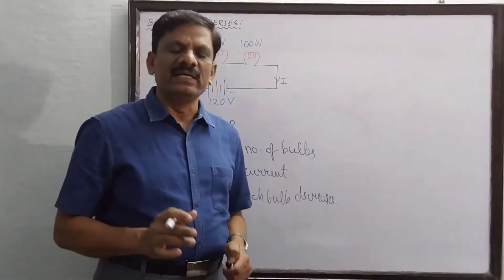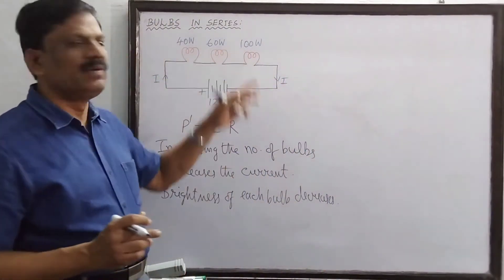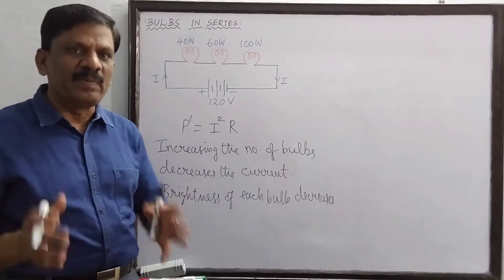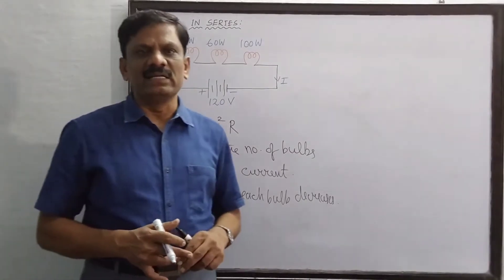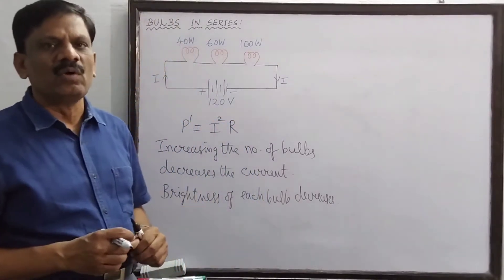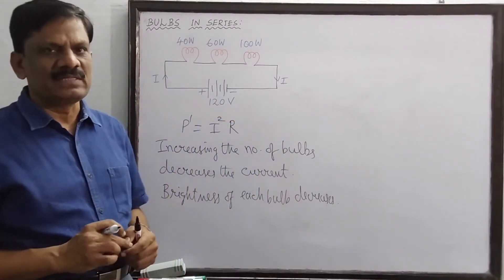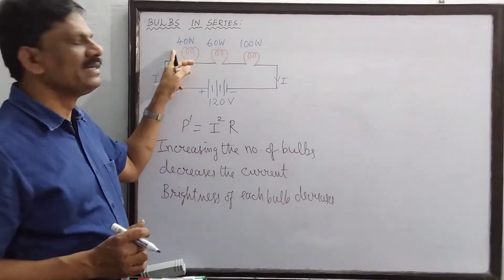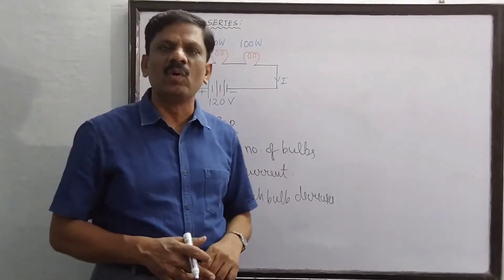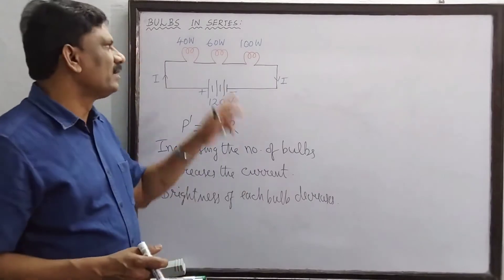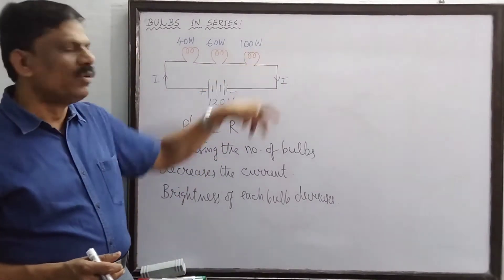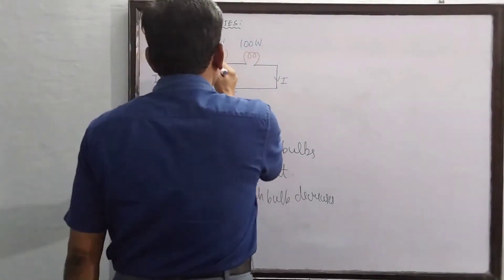The current flowing through each bulb is the same since they are in series, so we might expect them to glow with equal brightness, but that is not the case. In a series connection, the bulb with the least power will glow brightest. So here the dimmest bulb will be the 100-watt bulb. Let's prove this now.